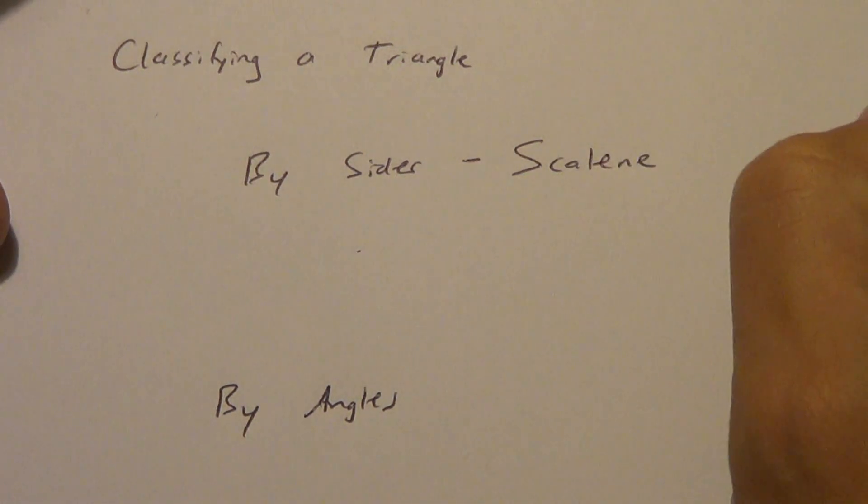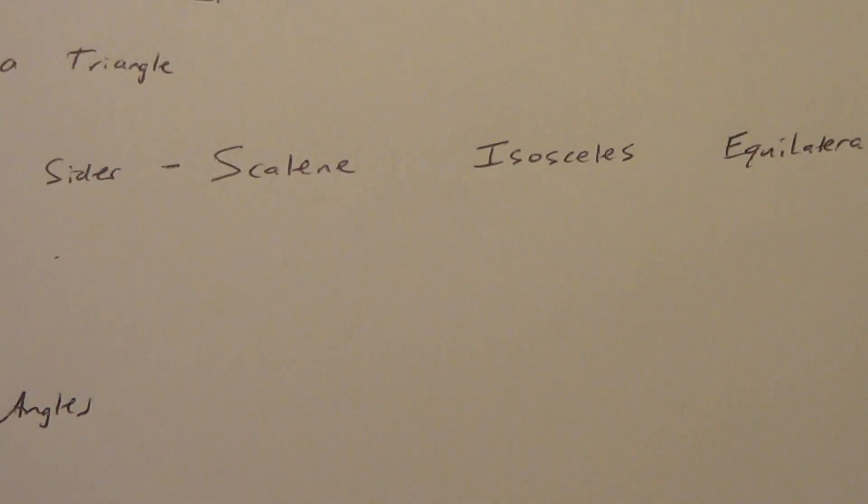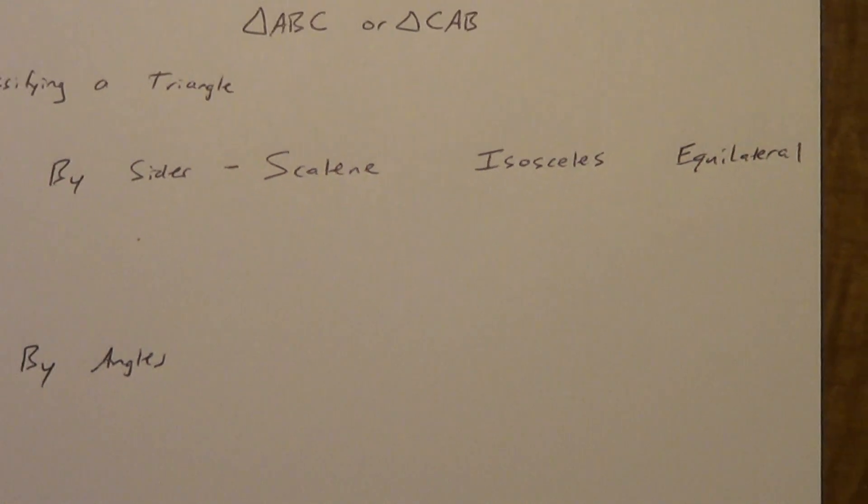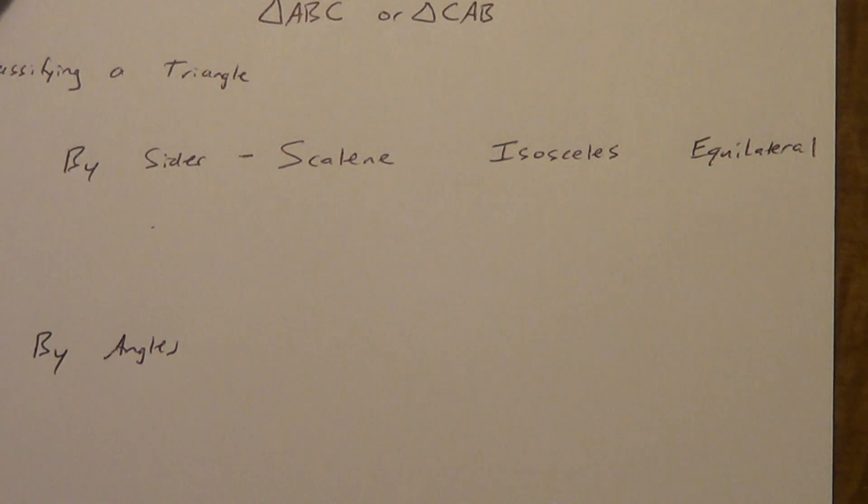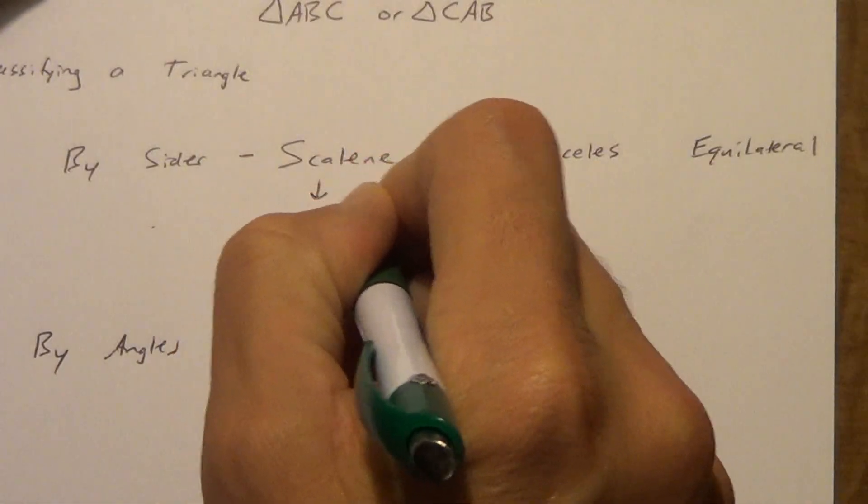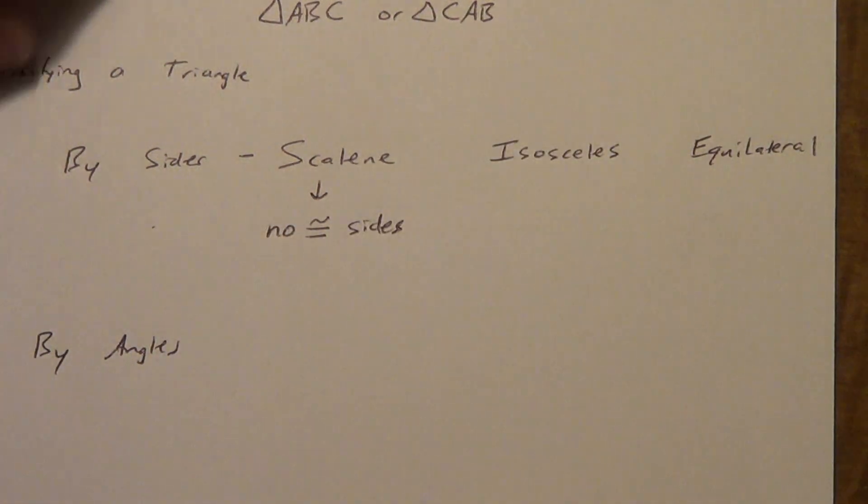So a couple possibilities by sides. We could have scalene. We could have isosceles. Or we could have equilateral. Scalene, isosceles, and equilateral. So any of those are acceptable for side names. So let's talk about what each of them means. So scalene. Scalene means no congruent sides. Okay, no congruent sides.